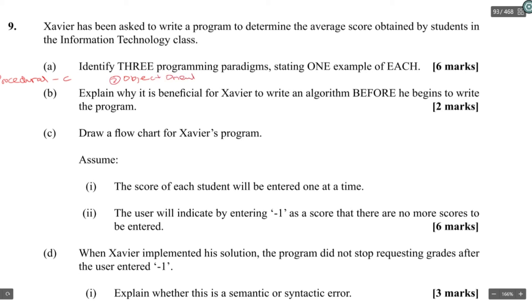I can't remember if I mix up Lisp and Prolog, but you can double-check that in the notes. But I believe that Lisp is the functional one and declarative is Prolog. Explain why it's beneficial for Xavier to write the algorithm before. Algorithms would give a guide that could be checked for logic errors before you actually start the code, before implementing the code. That makes it easier for you to not have errors, so it would save you time in the long run. Draw a flow chart for Xavier's program.